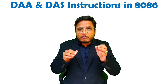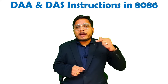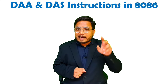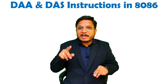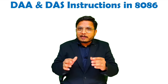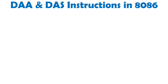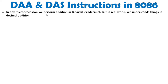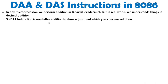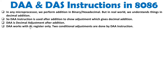Whenever you perform addition in hexadecimal, you will have to do some adjustment to convert that into decimal. That is what we achieve using DAA for addition and DAS for subtraction. As I have told you, in the microprocessor we perform addition in binary or hexadecimal, but in the real world we understand things in decimal addition only. DAA is used after addition to give decimal adjustment, and it works with the AL register only — you cannot use it with any other register.